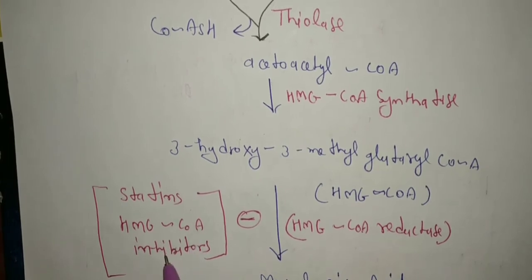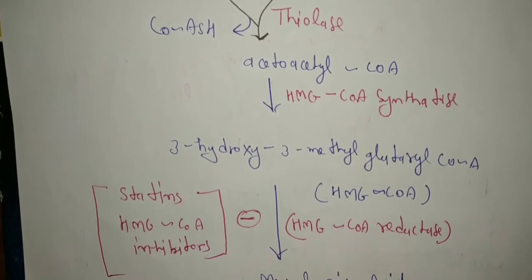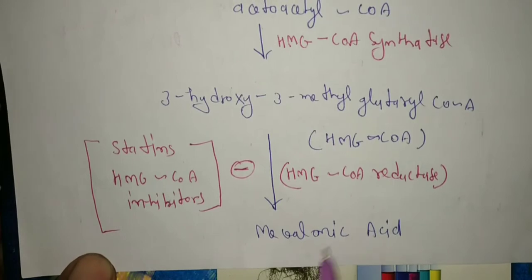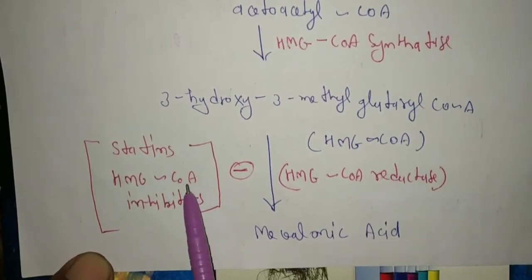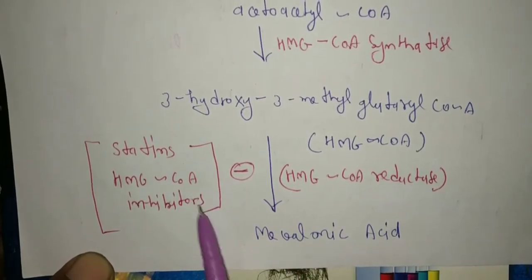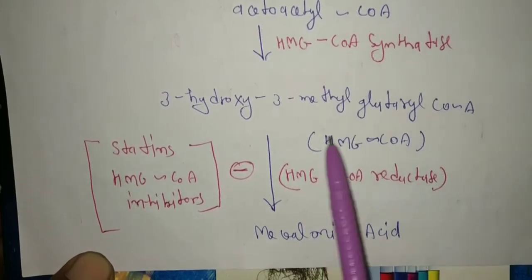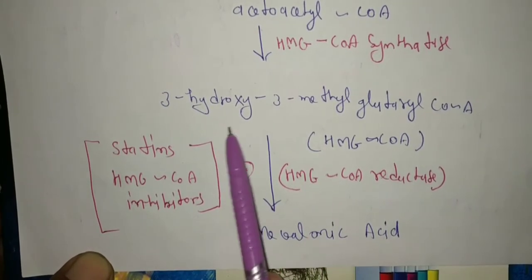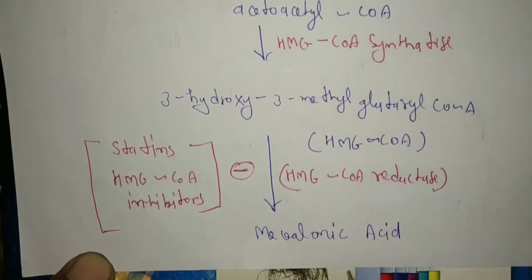Statins are HMG coenzyme A inhibitors. Statins inhibit that step, and further formation of mevalonic acid is inhibited by statin-containing drugs. HMG coenzyme A reductase further converts 3-hydroxy-3-methylglutaryl coenzyme A to mevalonic acid.